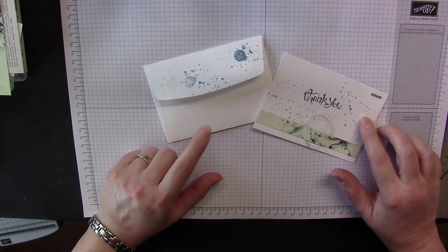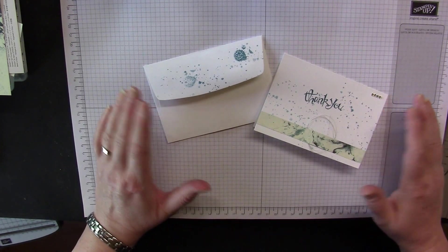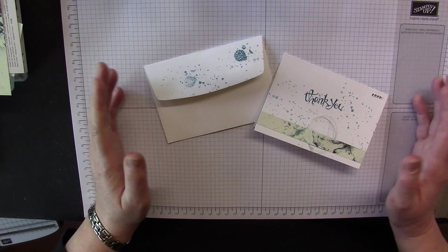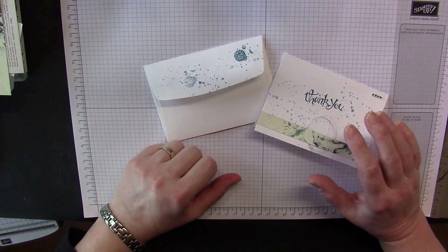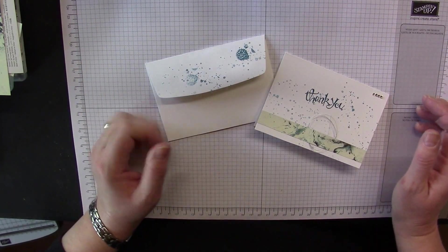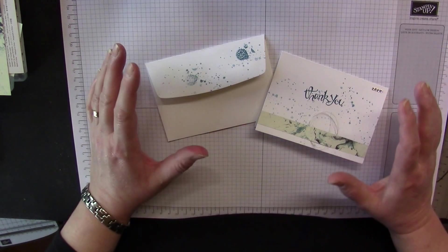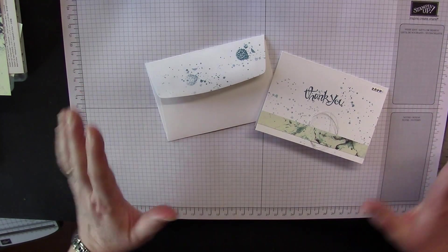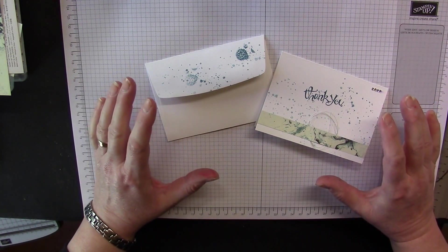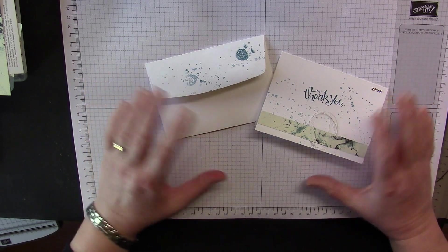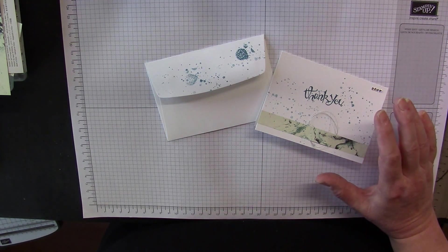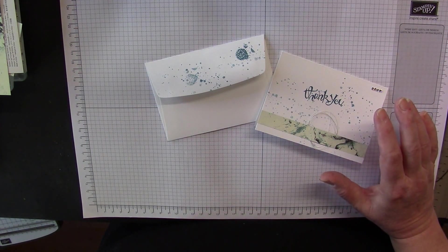The basis of what we're using is Stampin' Up note cards and envelopes and they come in packs of 20, so you get 20 envelopes and 20 note cards and they come in either whisper white or crumb cake. Today I want to illustrate how quickly you can make some really lovely little thank you cards that maybe if you're a demonstrator it would be a really quick one for your hostesses or a party event.